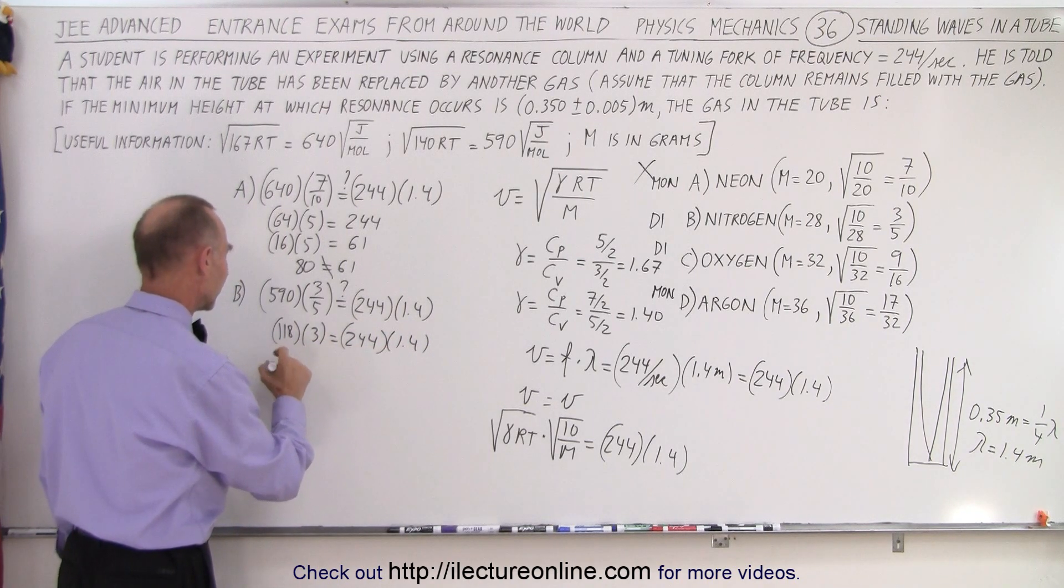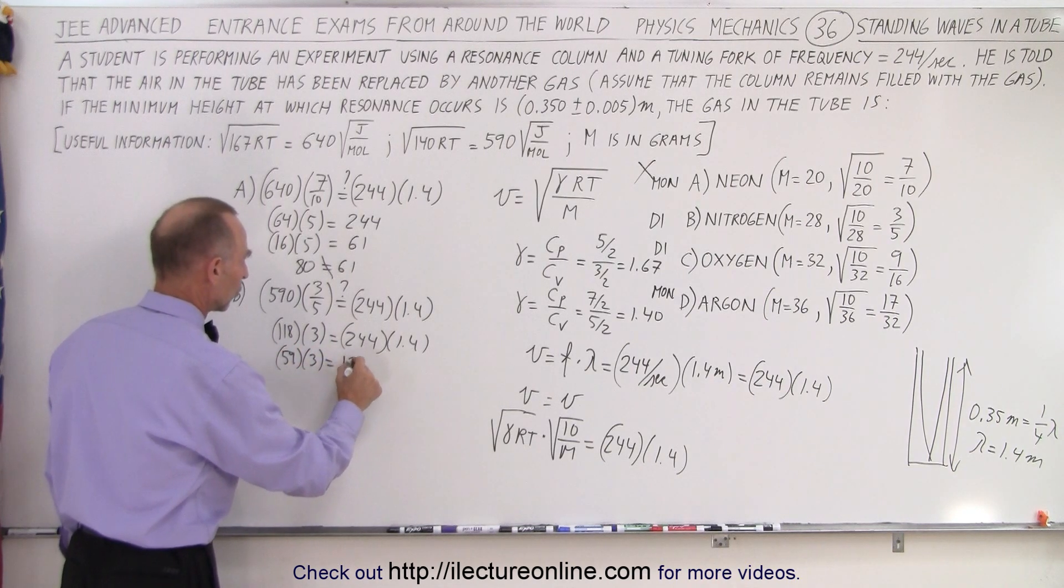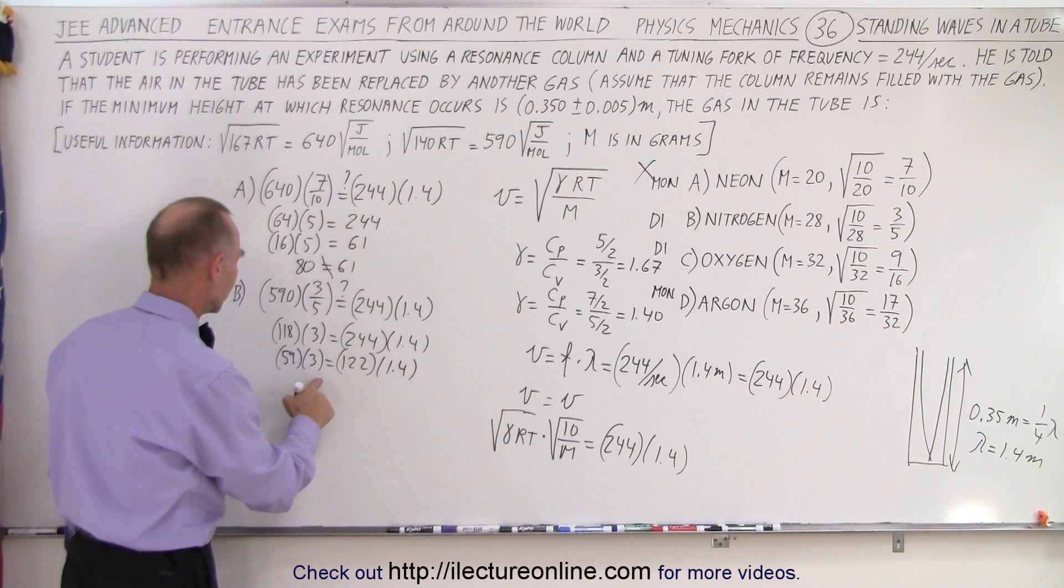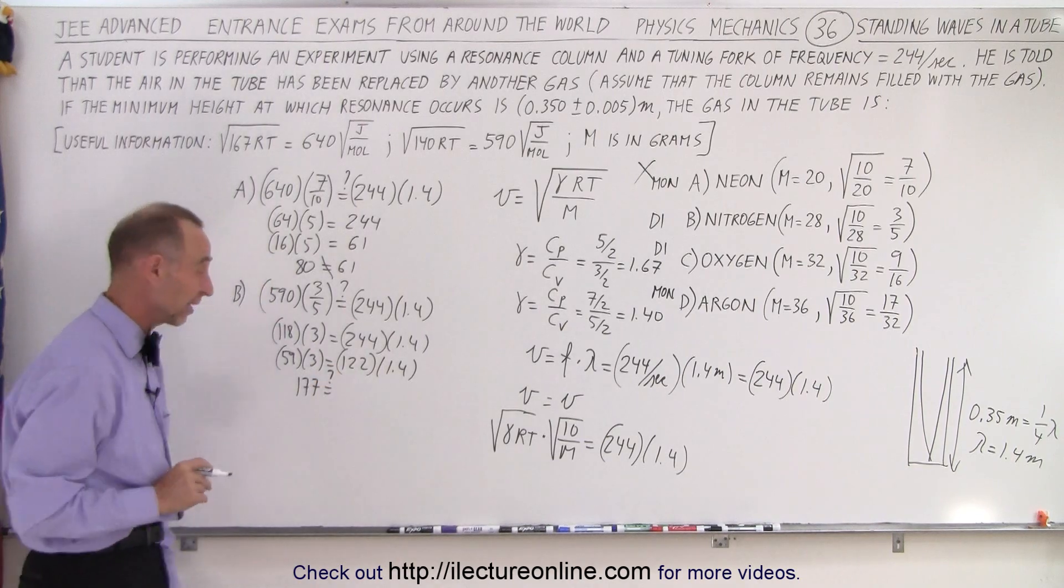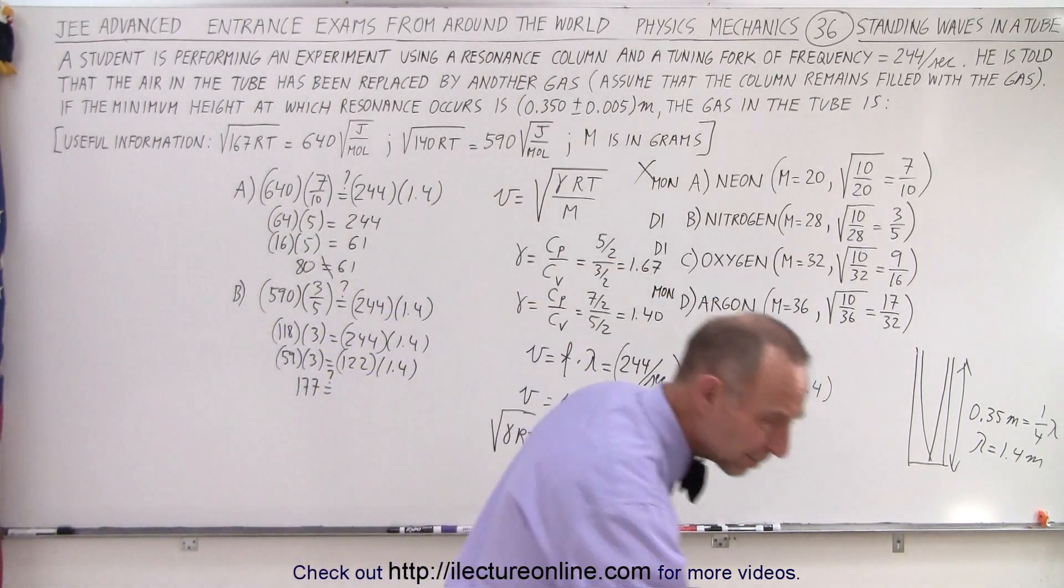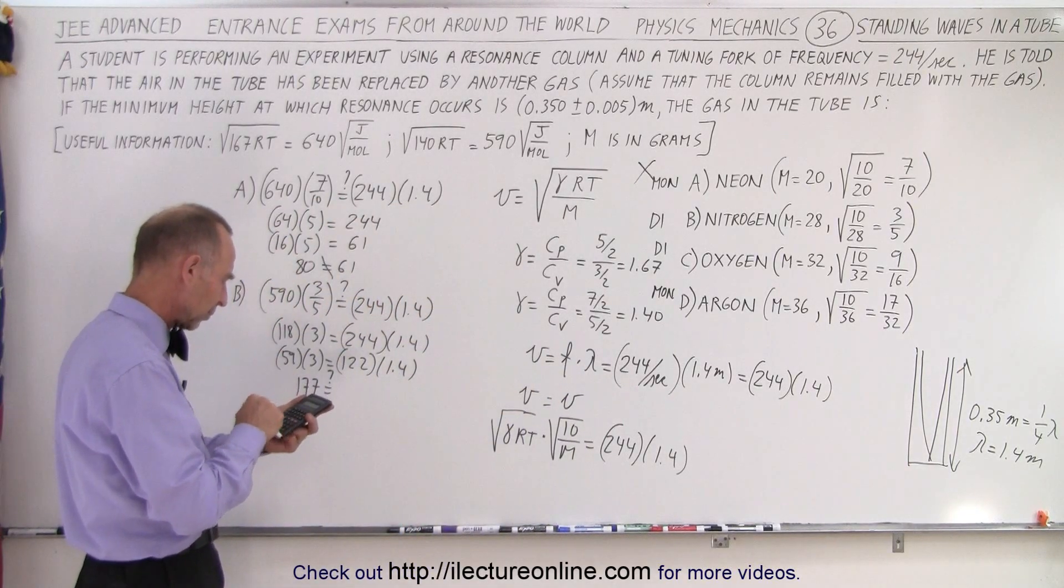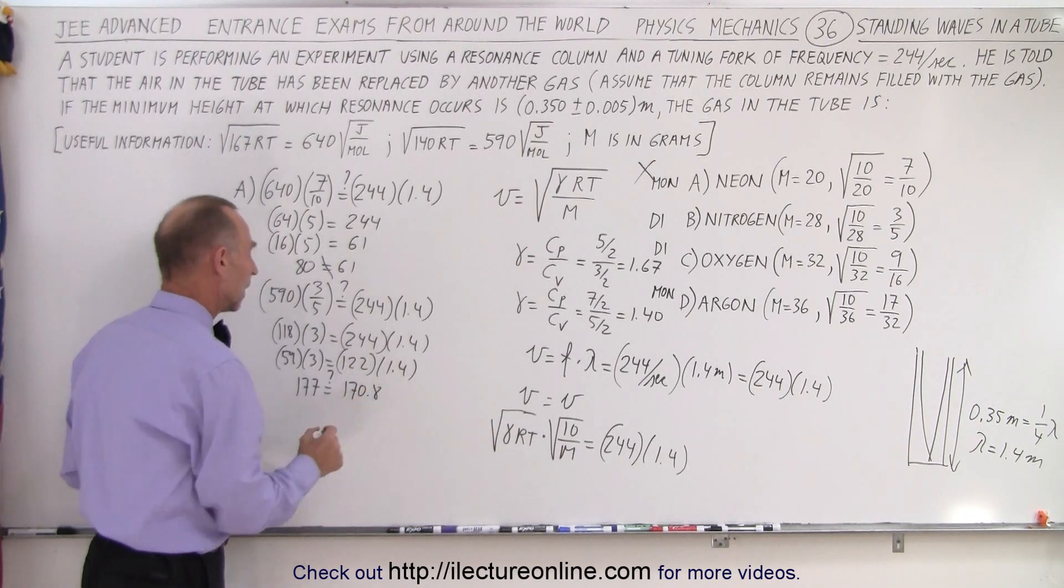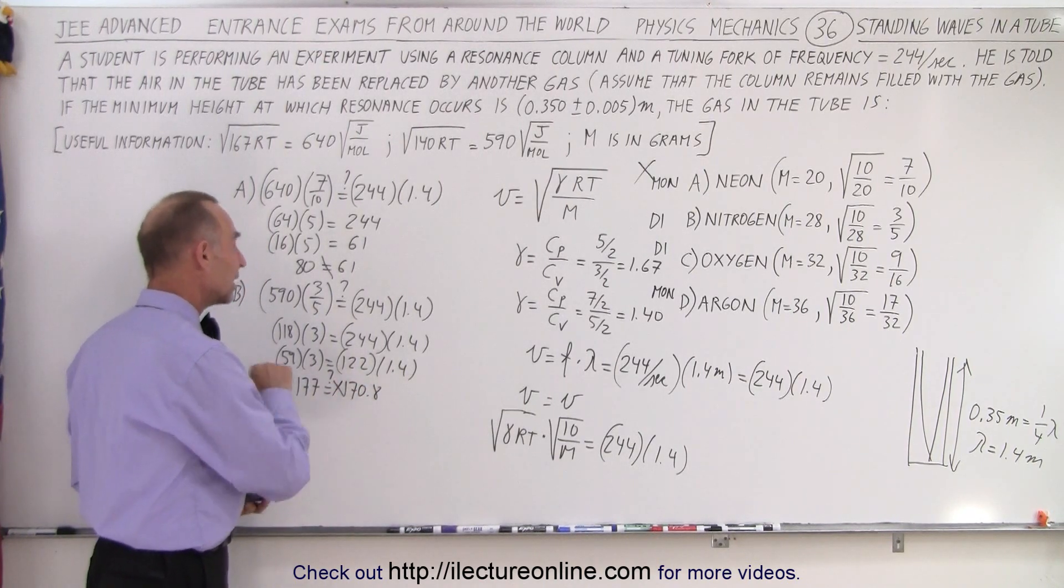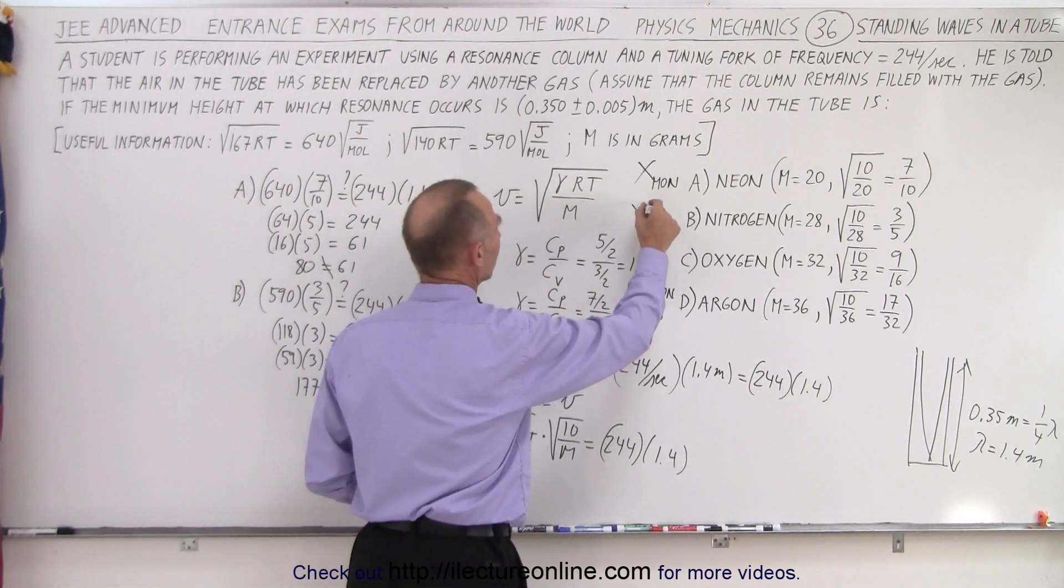5 goes into 590, that's 118. So we got 118 times 3 is equal to 244 times 1.4. That's 59 times 3 is equal to 122 times 1.4. That would be equal to 177 equals 170.8. This is not correct. That means that B is also not an answer.